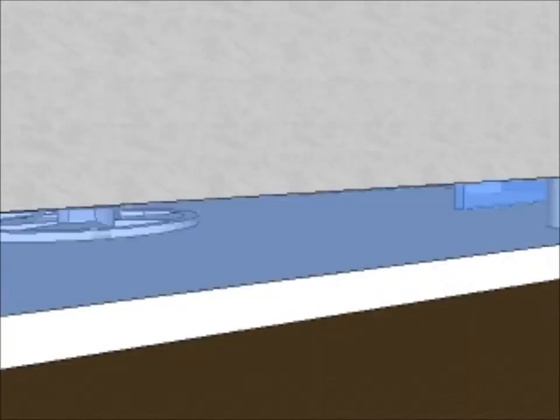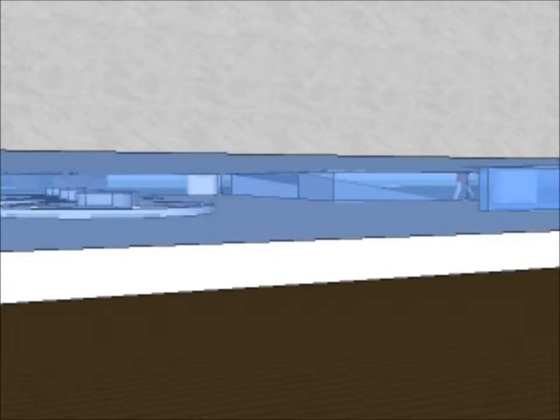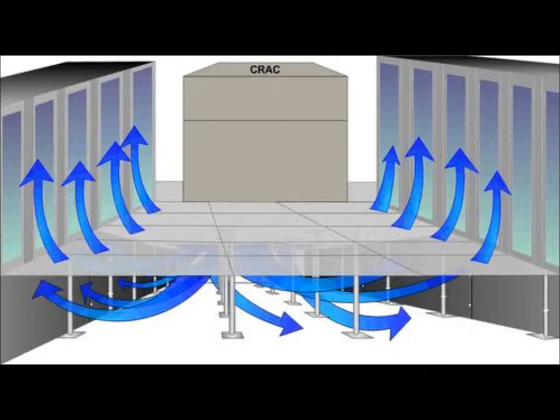Next, we will take a look at the key component in the functionality of the data center, the centralized air unit. The centralized air unit runs through the floor and travels up through the servers in order to keep the room cool so that the data servers don't overheat.